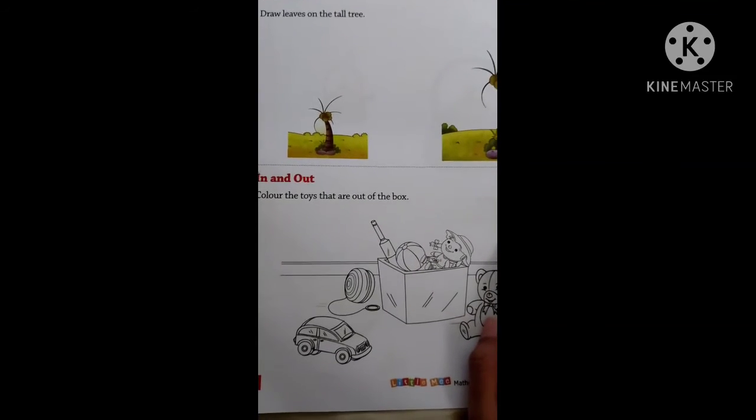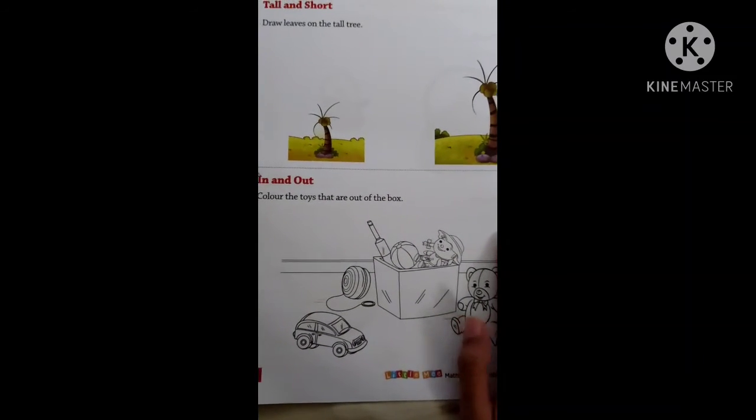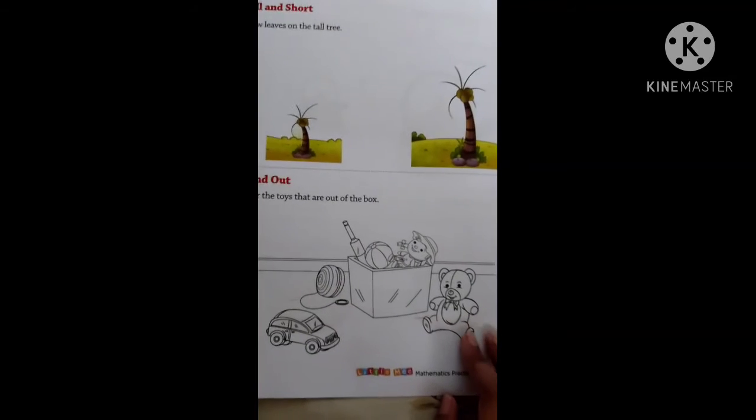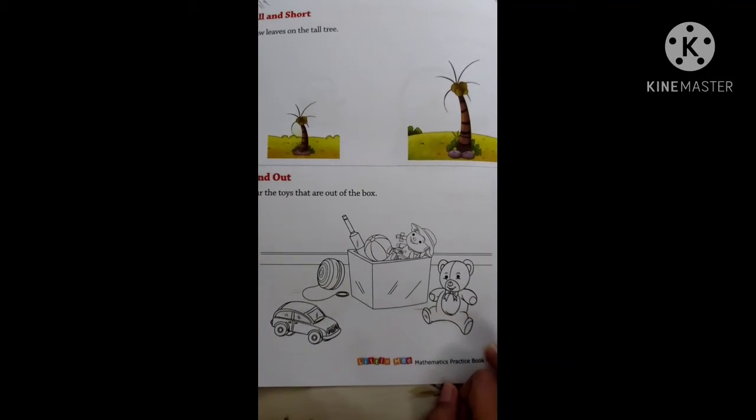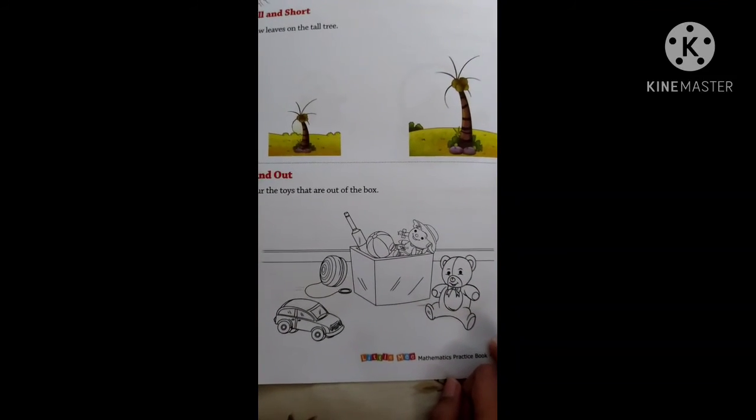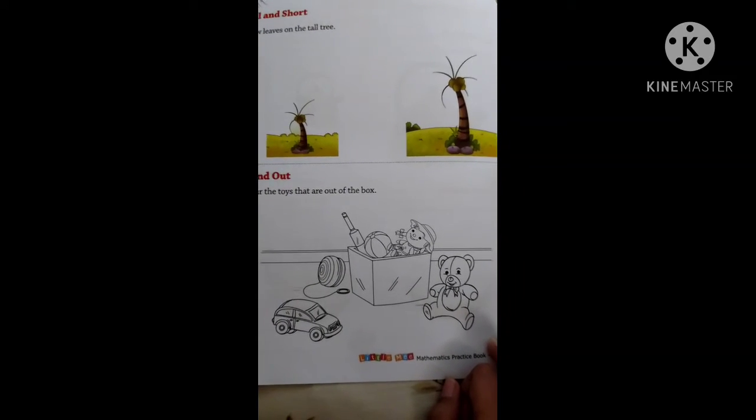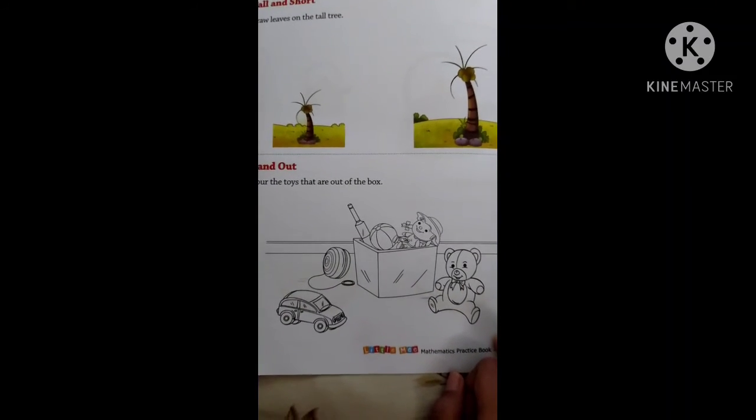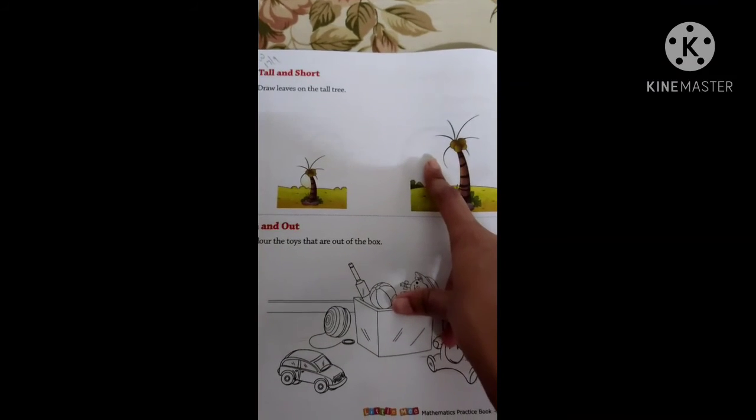In and out. This is your homework page. Color the toys that are out of the box. You are supposed to color which toys? Those that are outside the box. This is your homework, children. I hope you have done your previous homework.